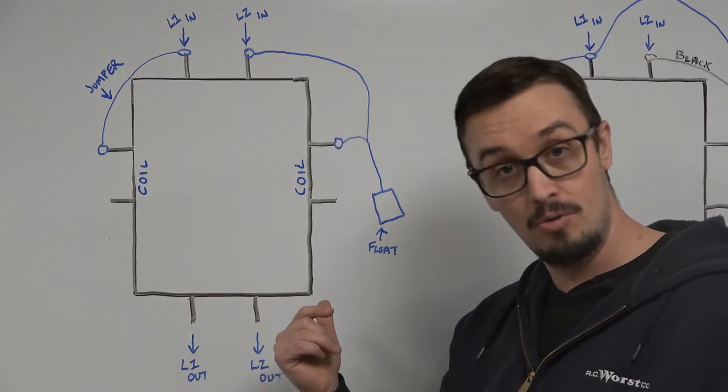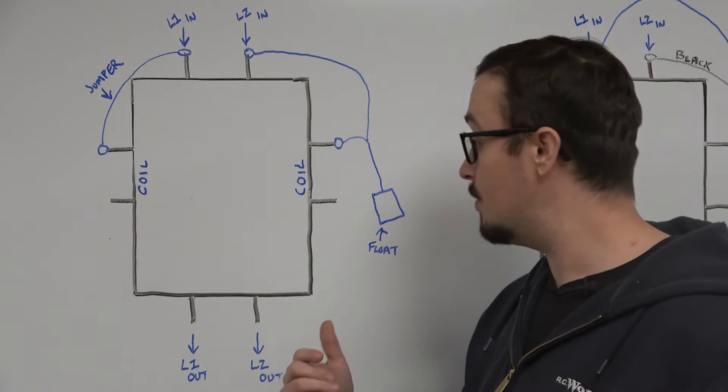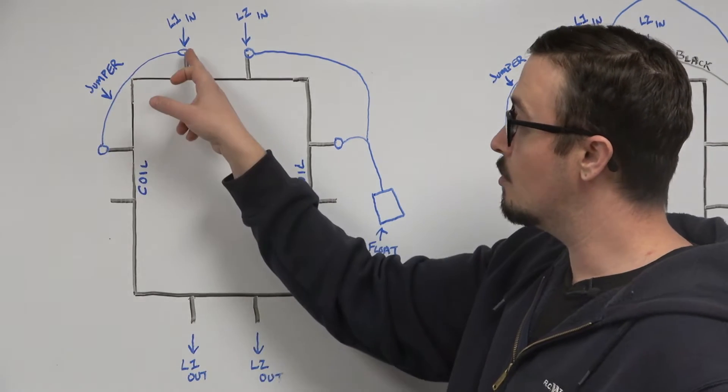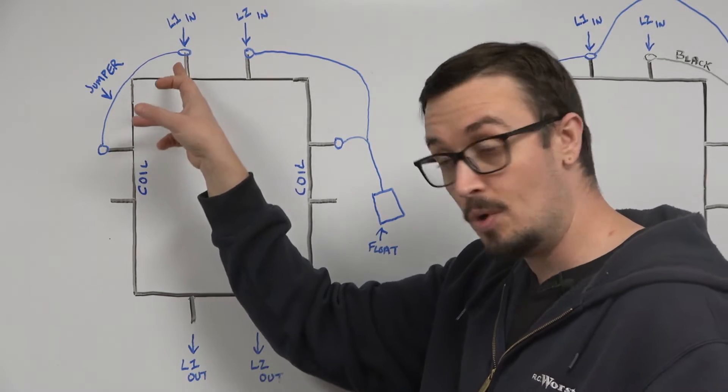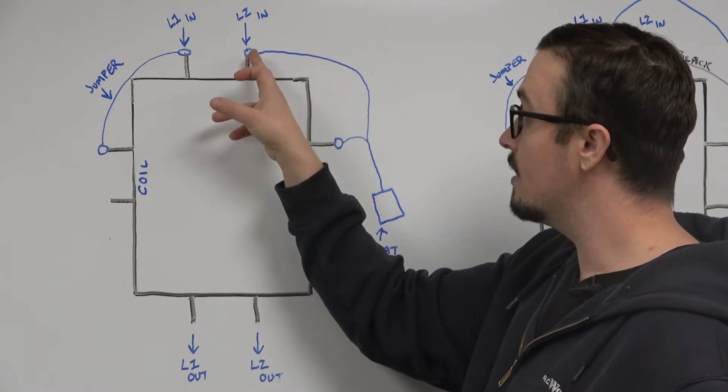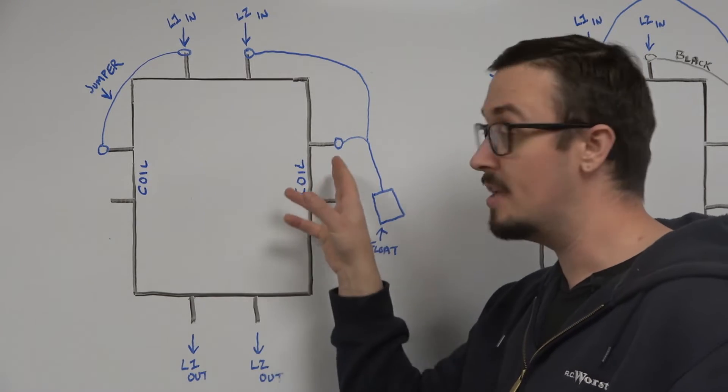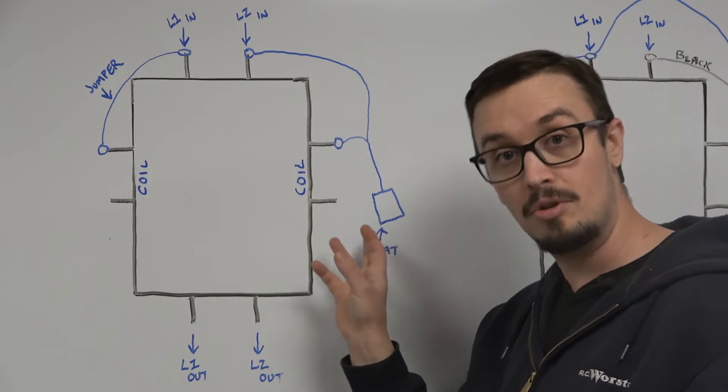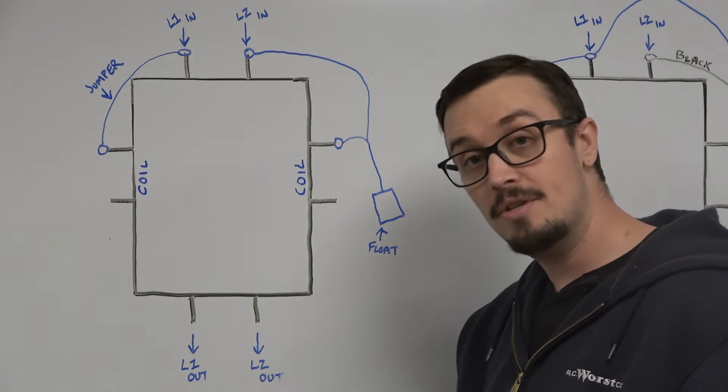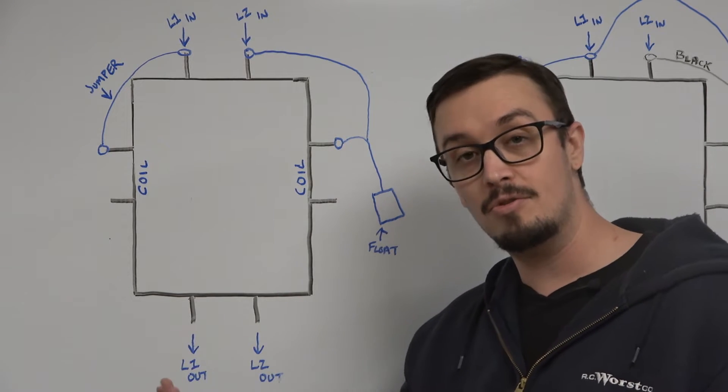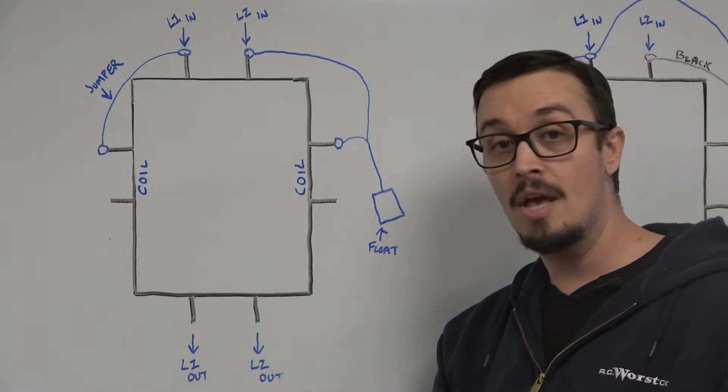So in this configuration we're jumpering the coil off of the incoming power from one side. Then we are running the other jumper essentially through the float switch which then engages the coil based on the float's closed condition. So it's a very simple setup but I know it's very common that people utilize contactors for these scenarios, so we figured we'd just show you guys how to wire one up.